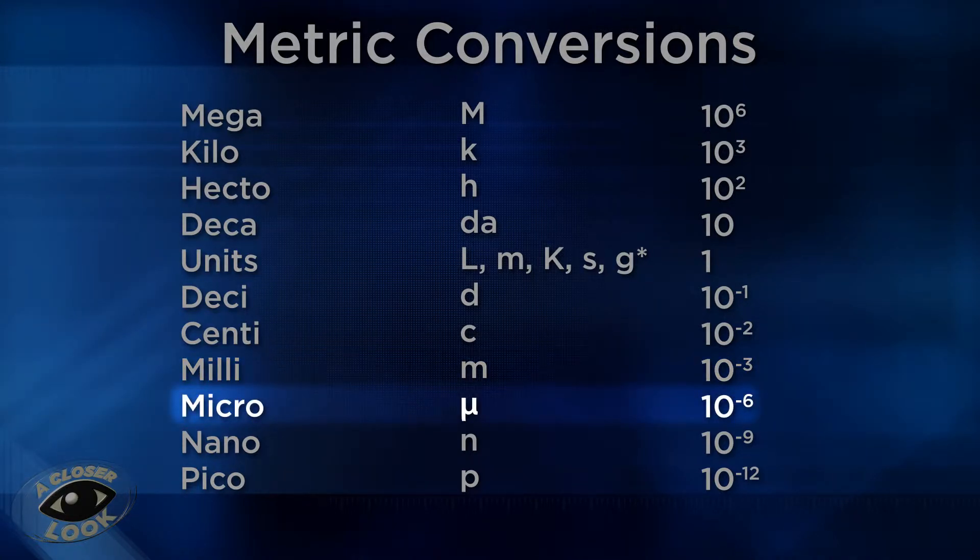Micro stands for one-millionth, represented by the Greek letter mu. Nano stands for one-billionth, represented by a lowercase n. Pico stands for one-trillionth, represented by a lowercase p.